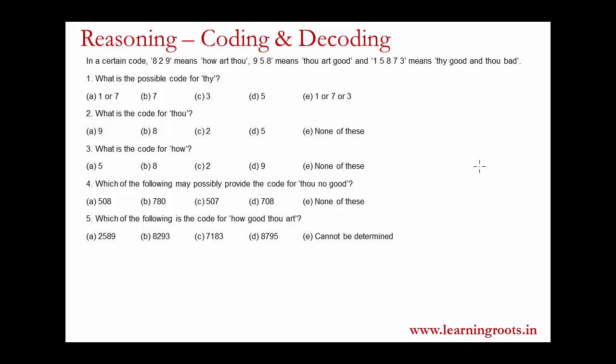You cannot assume that because something is present in some order it has to be that way. Unless the question cannot be solved with the data — if there are too many possibilities — then probably you can assume it, since sometimes the paper setter may not give full details. But most of the time, always assume it is not in a particular order and then proceed to solving these questions.